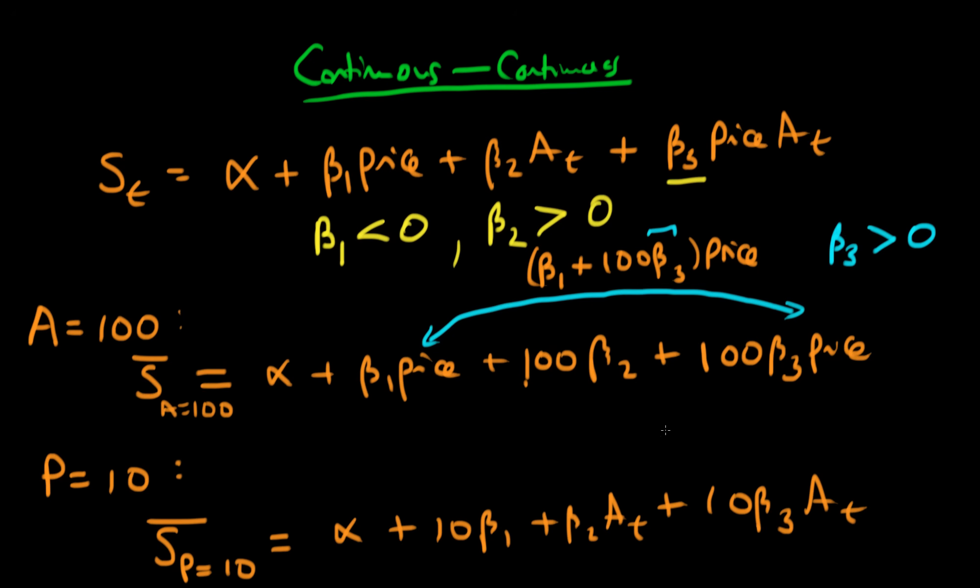So notice that again here we have two terms which essentially have the same variable, so we combine these. So we now have an aggregate effect of advertising being equal to beta 2 plus 10 beta 3.